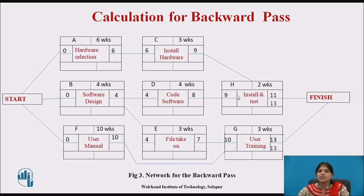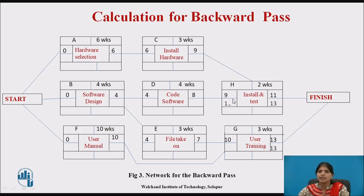For activity H, calculate the latest start date: latest finish minus duration — 13 minus 2 gives 11. For activity G, it requires 3 weeks and the latest finish date is 13, so 13 minus 3 gives 10.